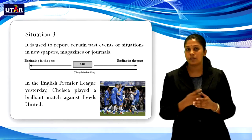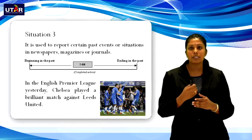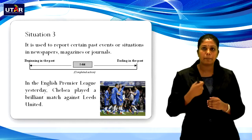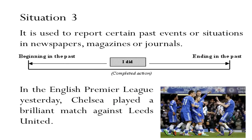Situation 3 — past simple is used to report certain past events or situations in newspapers, magazines, or journals. For example: In the English Premier League yesterday, Chelsea played a brilliant match against Leeds United. This is something that happened yesterday and is reported in the newspaper today, so we use past simple form.